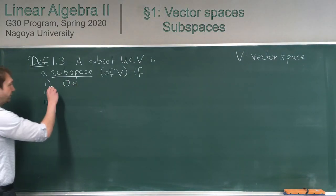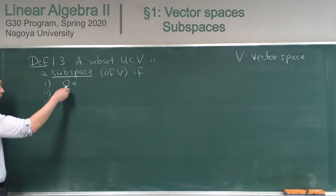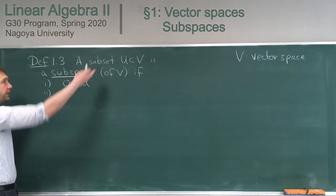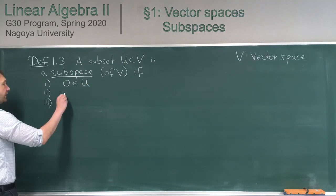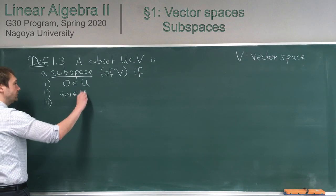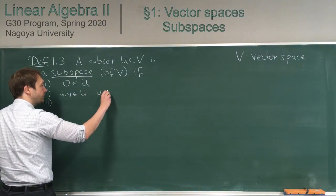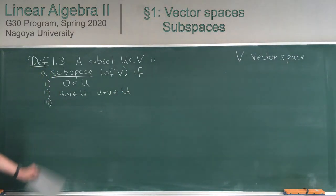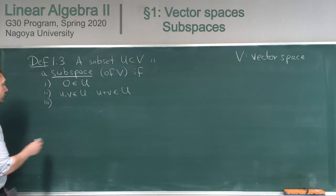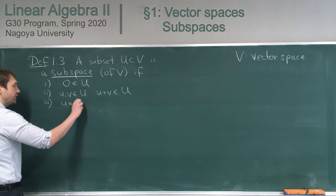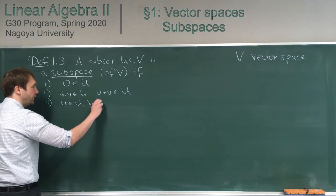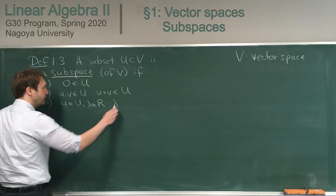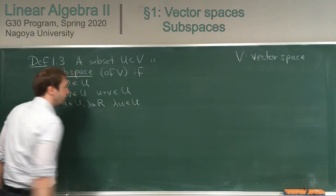The second condition is that U is closed under addition, which means if I have two elements u and v in U, then also the sum u plus v is in U. The third condition is that U is also closed under scalar multiplication: if I have an element u in U and a scalar — meaning a real number — then also lambda times u is in U.